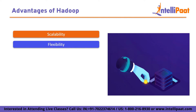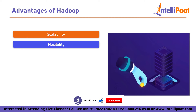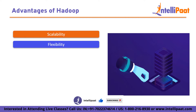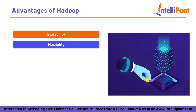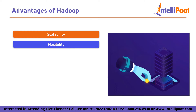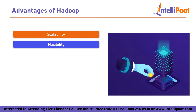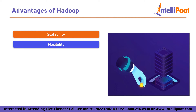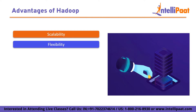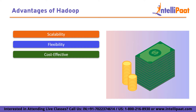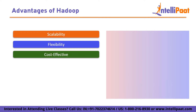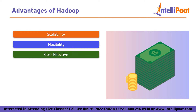Flexibility. Hadoop can handle a wide variety of data types including structured, semi-structured, and unstructured data. It can also handle different data sources such as social media, log files, and machine-generated data. This flexibility allows organizations to store and process a variety of data types in a single platform. Next comes Cost Effectiveness. Hadoop is designed to run on commodity hardware, which is much cheaper than traditional enterprise storage and processing solutions. This makes it a cost-effective solution for managing and analyzing large volumes of data.